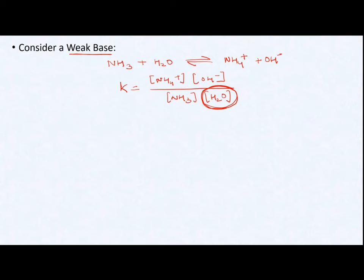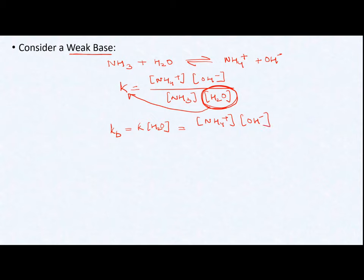Because the concentration of water will not change with time, I can take it to the other side and get a new constant, Kb, which equals K multiplied by the concentration of water. This gives Kb equal to the concentration of NH₄⁺ multiplied by OH⁻ concentration, divided by the concentration of unionized NH₃. This is my base ionization constant.